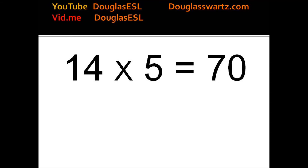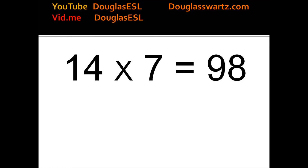14 times 5 equals 70. 14 times 6 equals 84. 14 times 7 equals 98.